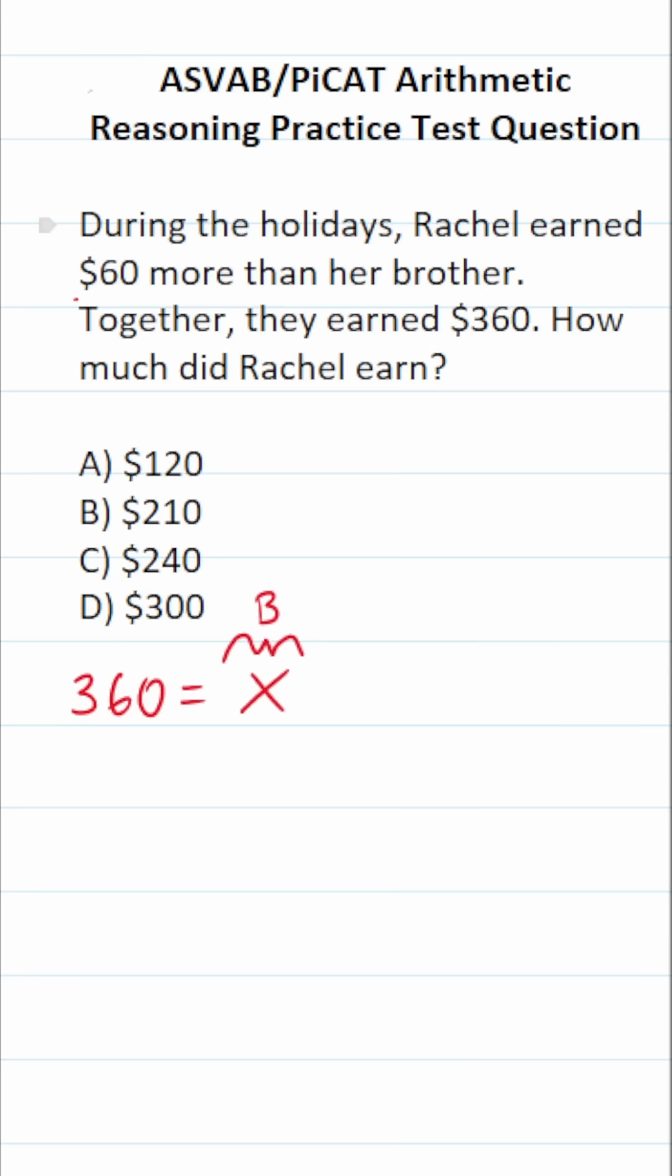And according to the problem, she earned $60 more than her brother. So that's going to be X plus 60. This is how much Rachel earned. So now we have an equation we can solve. Let's go ahead and do that.